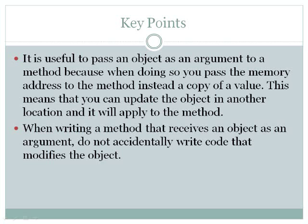Key points. It is useful to pass an object as an argument to a method, because when doing so, you pass the memory address to the method instead of a copy of the value. This means that you can update the object in another location and it will apply to the method. When writing a method that receives an object as an argument, do not accidentally write code that modifies the object.